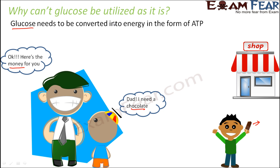Plants need energy, but by photosynthesis what plants get is glucose. So glucose is just like money — it is not energy itself, but it can be converted into energy. That is why respiration happens, so that glucose can be converted into what the plants actually need. Energy is stored in the form of ATP molecules, which are like energy currency. Just like a 100 rupee note or 500 rupee note can buy you many things, ATP is energy currency. As you spend that energy, your number of ATP molecules keeps reducing.